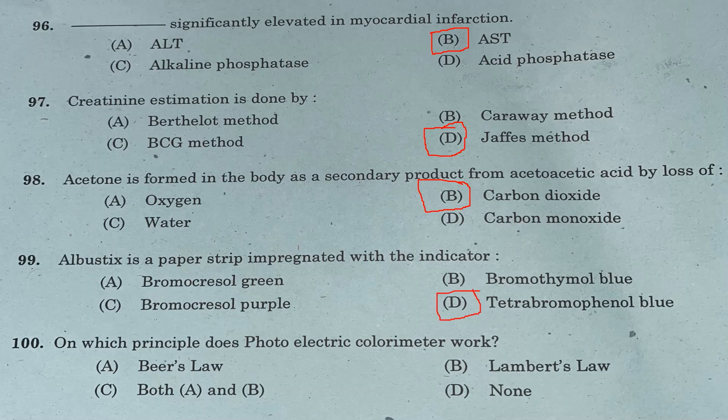Question 99: Albustix is a paper strip impregnated with the indicator — Option A: bromocresol green. Option B: bromothymol blue. Option C: bromocresol purple. Option D: tetrabromophenol blue. Answer is Option D, tetrabromophenol blue.